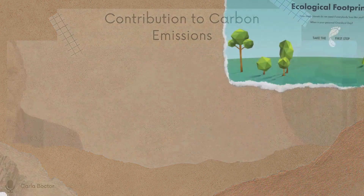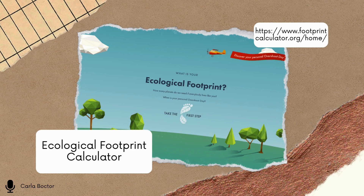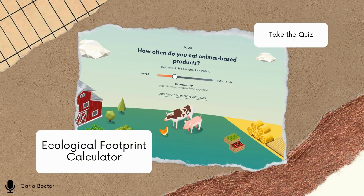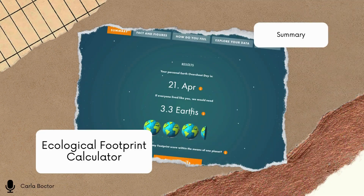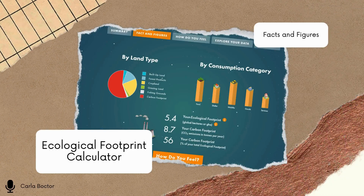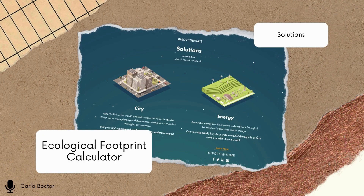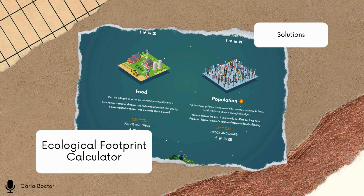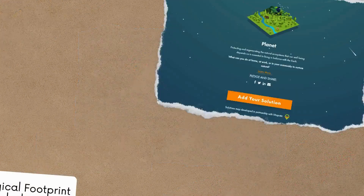What we've accomplished is the calculation of our individual carbon footprint. Utilizing the footprint calculator website, we assessed comprehensive information for this assessment. Our process involved taking the quiz, which then generates a summary of how our lifestyles impact the environment. The platform offers facts, statistics, and a variety of solutions covering areas like city living, energy consumption, dietary choices, population impact, and global considerations.